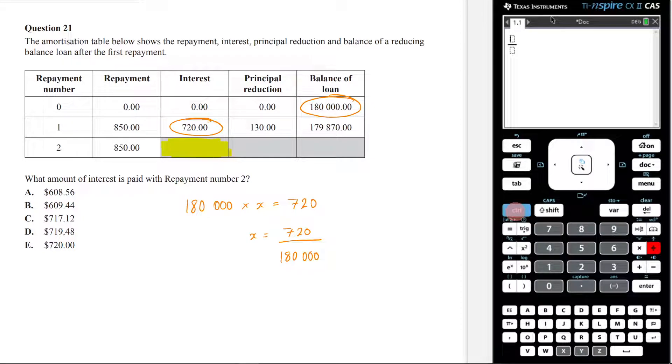So I'll go control divide 720 over 180, one, two, three. I hit control enter. It's going to be that. So that is my interest rate. My interest rate is 0.004.